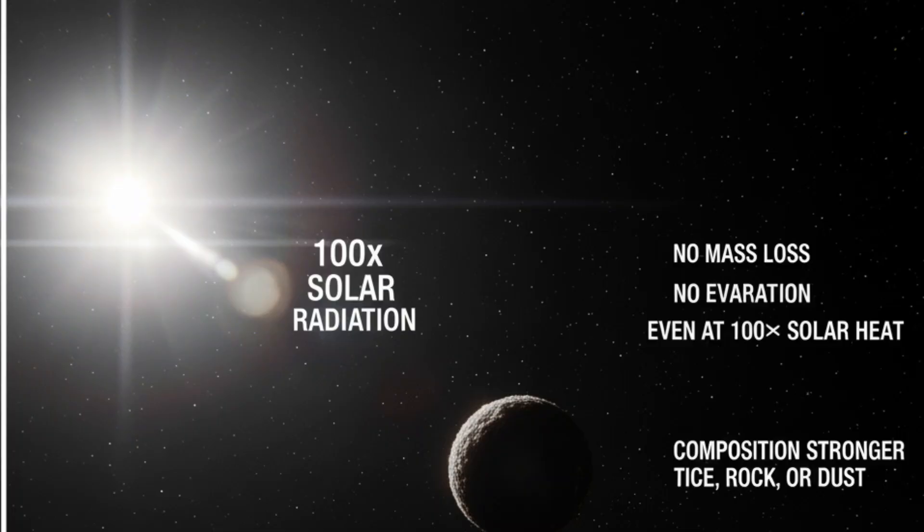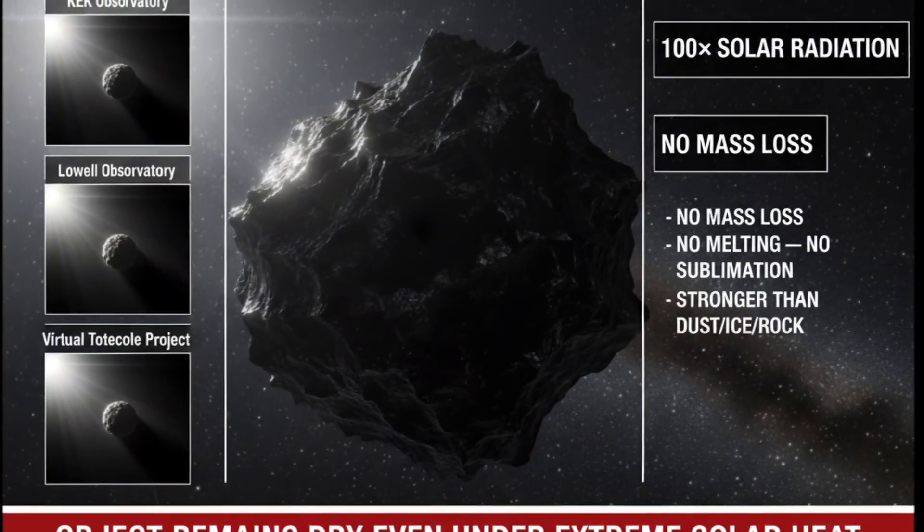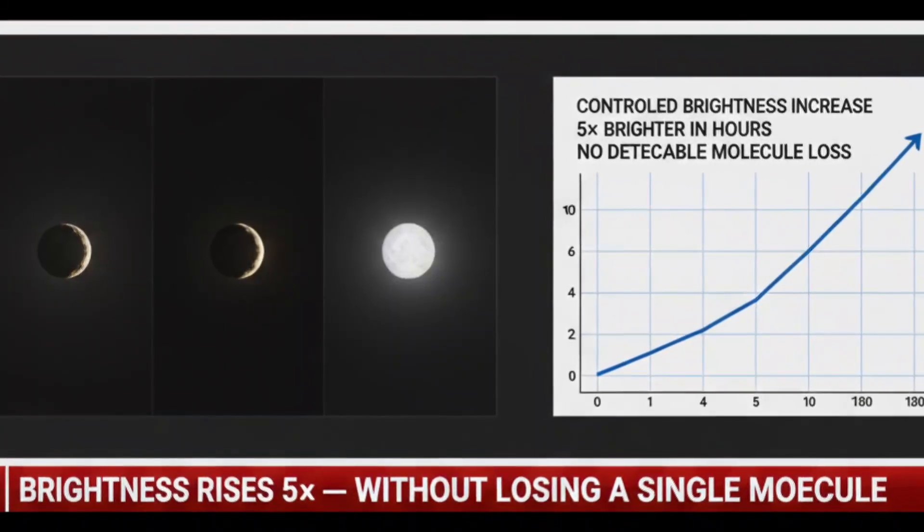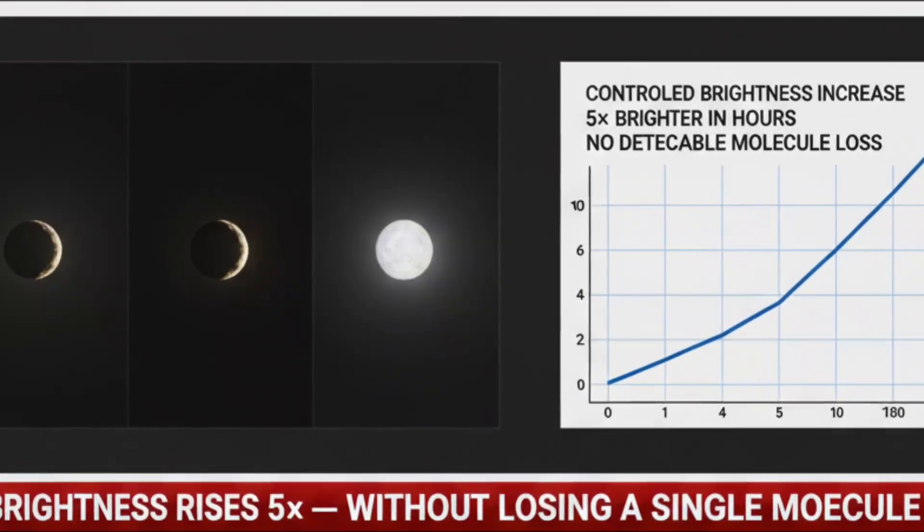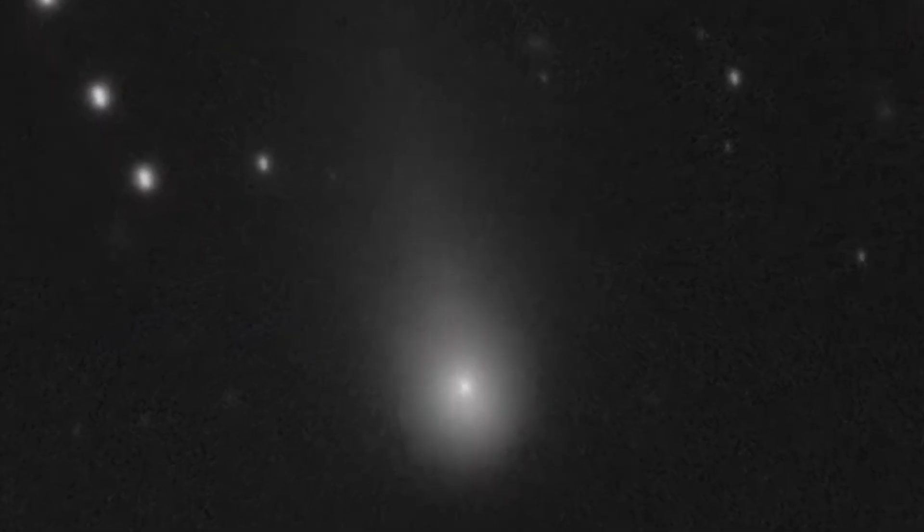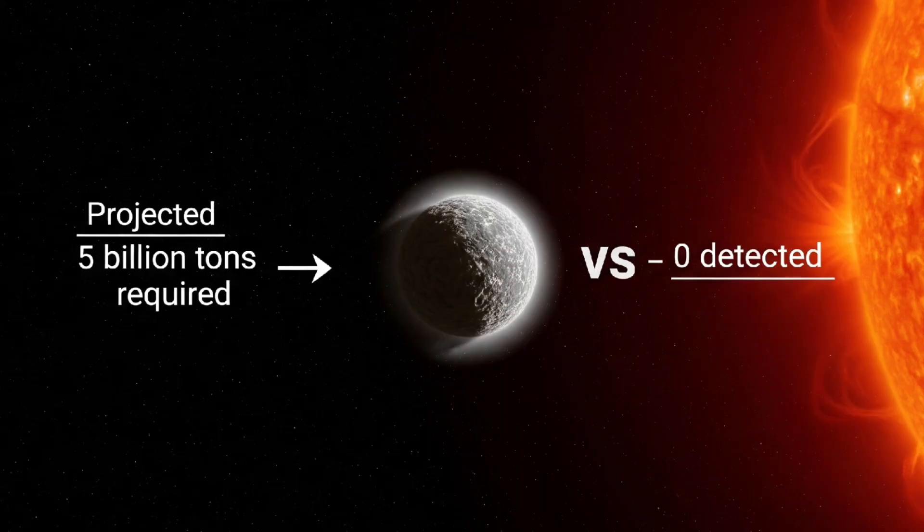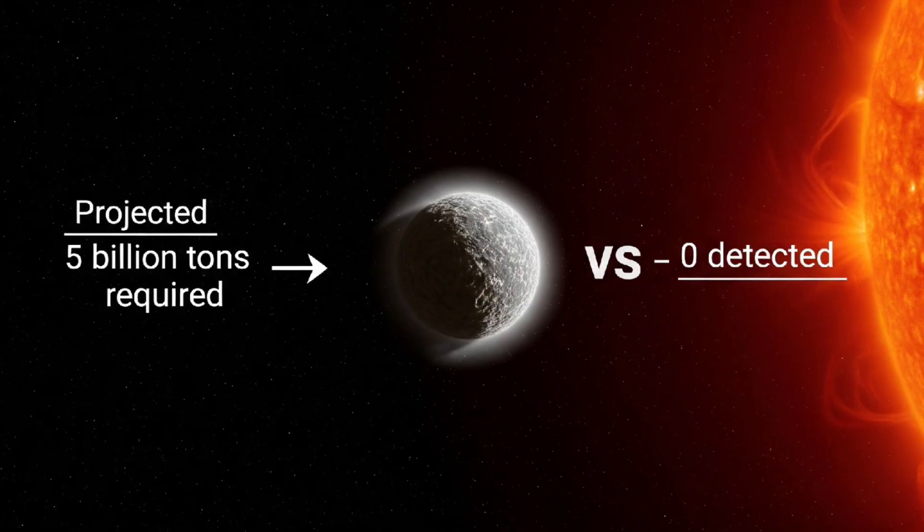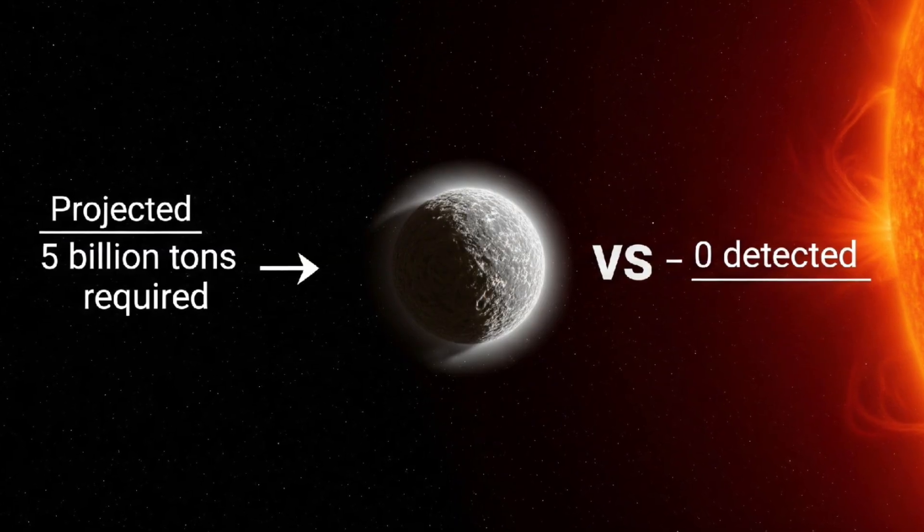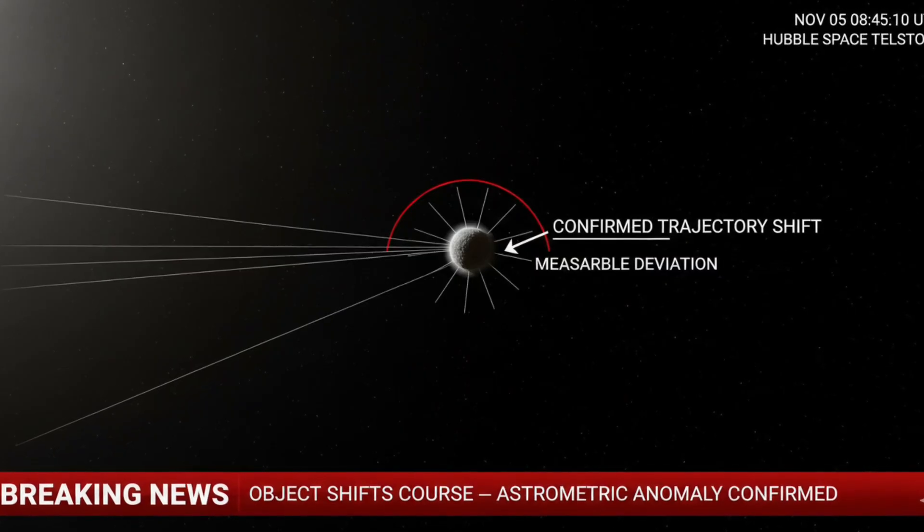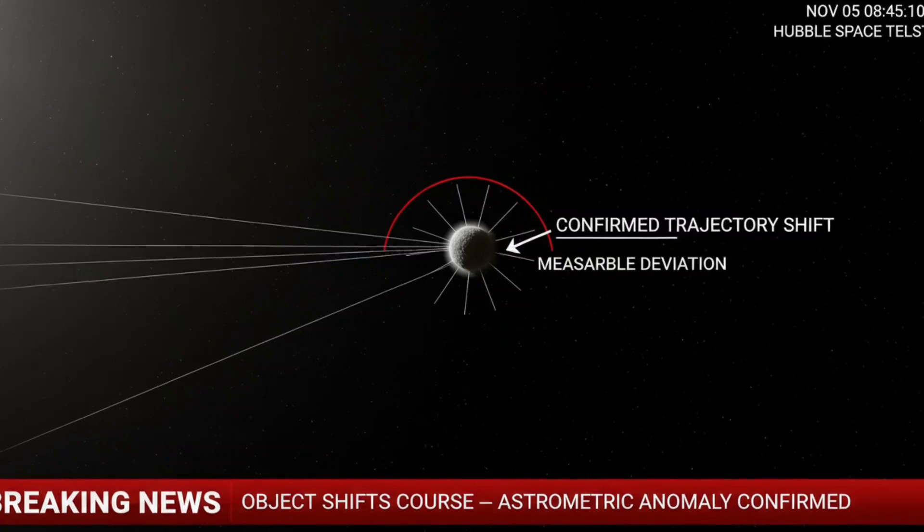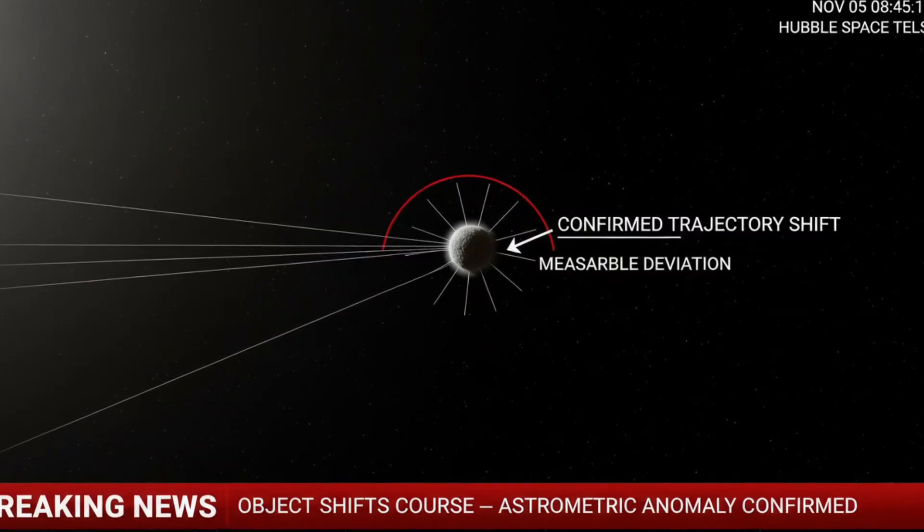Even under a hundred times more solar radiation than the 1AU benchmark, the object remained dry. To survive that heat without losing mass, an interstellar body would need to be made of something far stronger than dust, ice, or rock. And yet the object's brightness didn't fade or fluctuate. Instead, it brightened. A clean, controlled increase. Five times brighter in just hours, without shedding a single detectable molecule. Avi Loeb ran the numbers himself. If the object had accelerated the way the astrometric data suggested, it would have required the release of 5 billion tons of material. But telescopes saw none of it. Not a dust plume, not a gas jet, not even a hint of sublimation. The region around the object was pristine. Every natural explanation collapsed under the math.